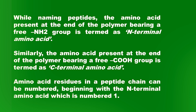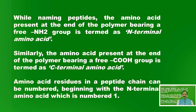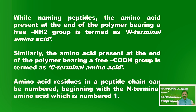By convention, the end of the polypeptide chain that has the free NH2 group is called the N-terminal amino acid — we number it as position 1 on the left-hand side. The end that has the free COOH group on the right-hand side is called the C-terminal amino acid.